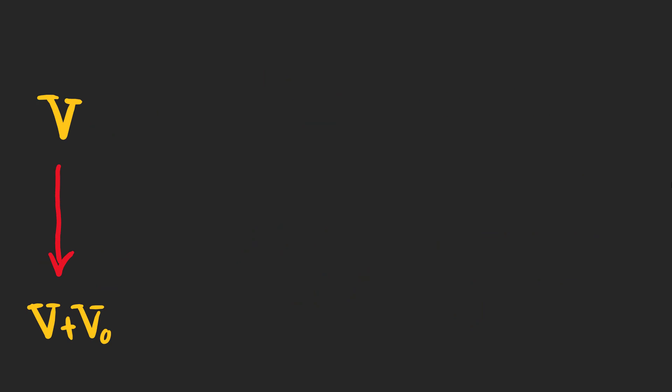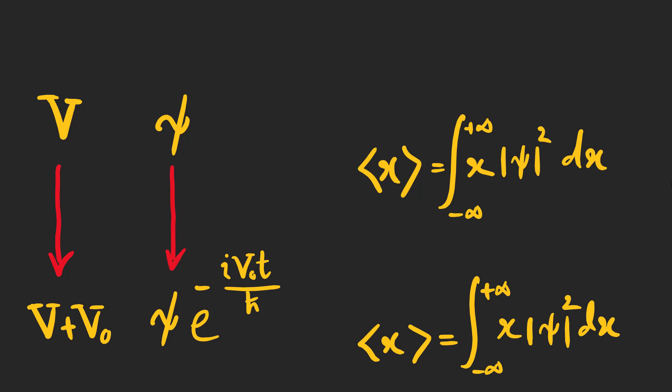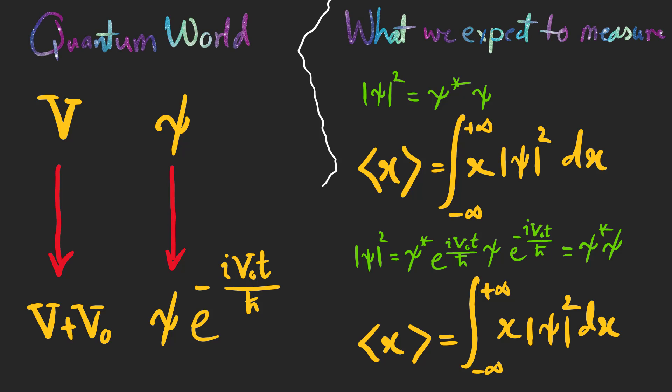As an example, if we add a constant potential v0 to the potential, psi changes. But the expectation value doesn't change because psi squared remains the same. Actually, something seems to have changed in the quantum world, but in our world of measurements, everything seems to be unchanged.